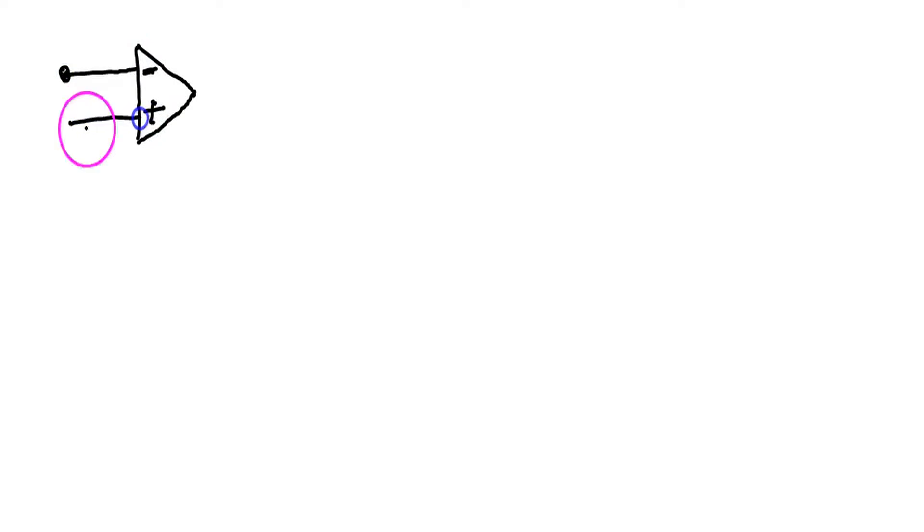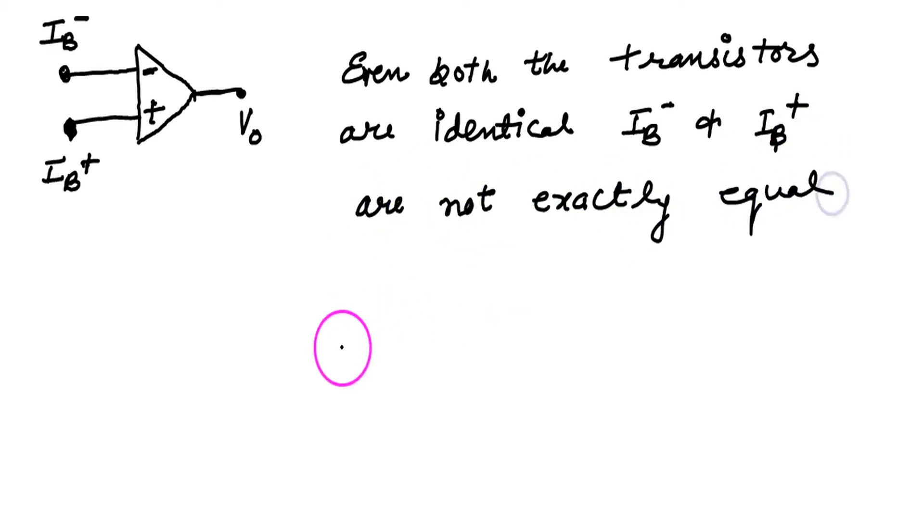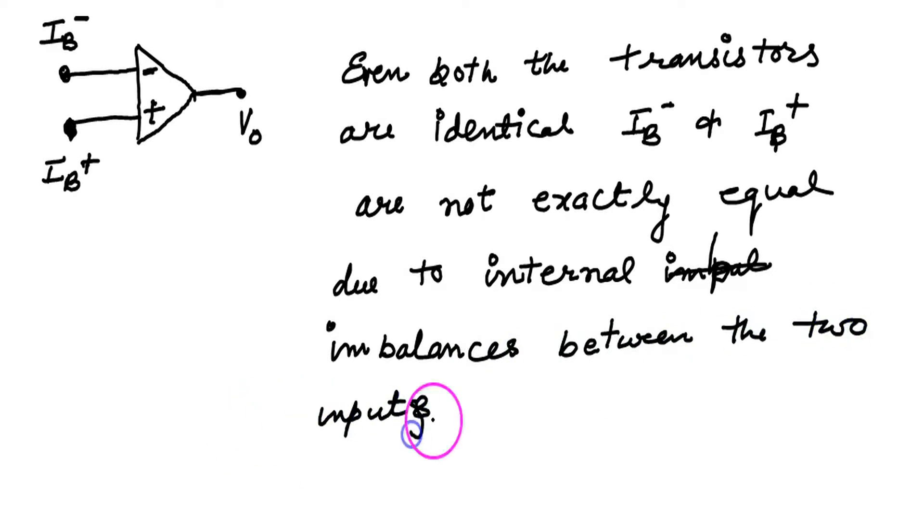An op-amplifier is shown. Minus is the inverting terminal, plus is non-inverting. IB minus and IB plus are input bias currents to the two terminals. Even if both the transistors with which the op-amplifiers are made are exactly identical, IB minus and IB plus are not exactly the same due to internal imbalances between the two inputs. This is why IB minus and IB plus are slightly different.